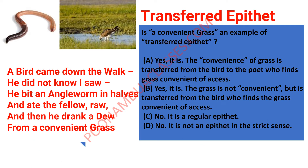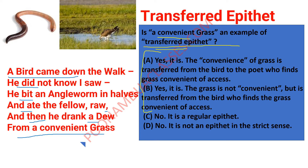Let us go to this question. I hope you have understood the concept. The poem reads: 'A bird came down the walk, he did not know I saw. He bit an angle worm in half and ate the fellow raw. And then he drank a dew from a convenient grass.' The question is: is 'a convenient grass' an example of transferred epithet? Option A says yes — the convenience of grass is transferred from the bird to the poet who finds grass convenient of access. Option B says yes, it is a transferred epithet but the grass is not convenient — it is transferred from the bird who finds grass convenient of access. Option C says no, it is a regular epithet. Option D says no, it is not an epithet in the strict sense. Please leave your answer in the comments.